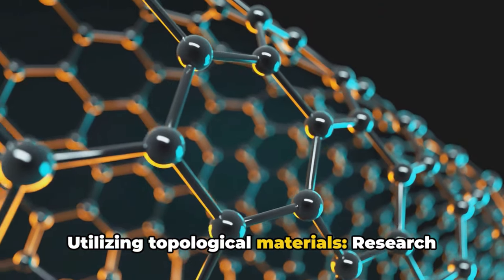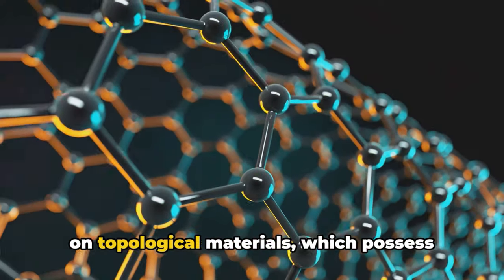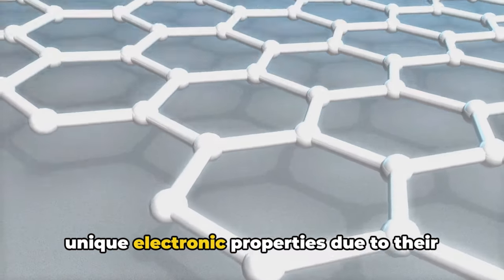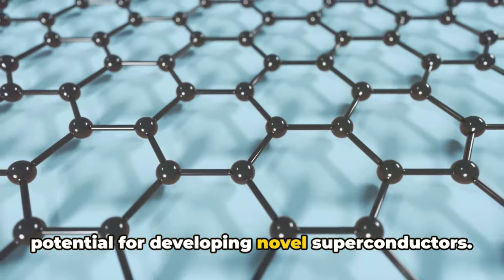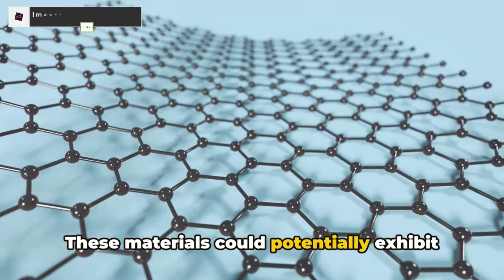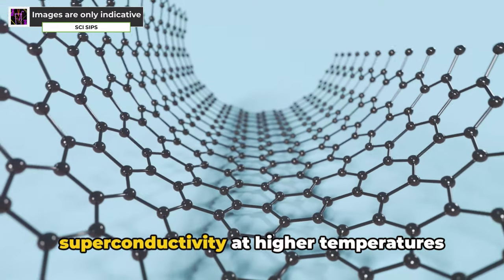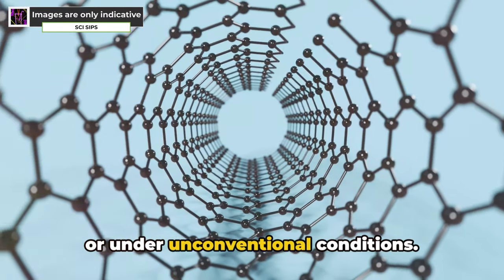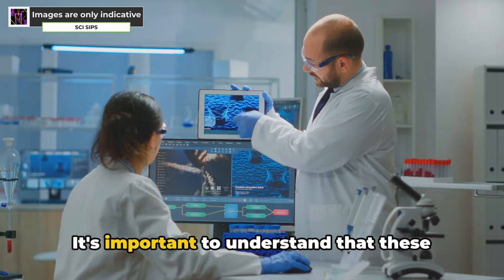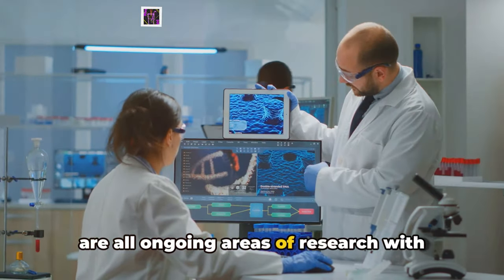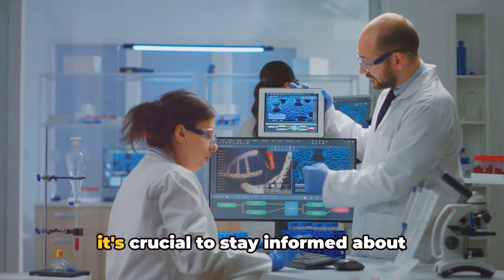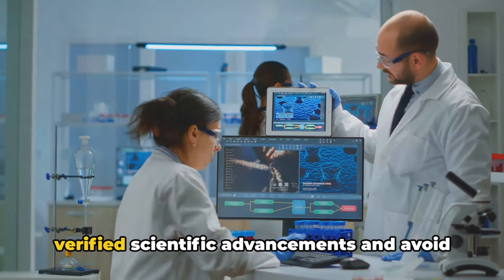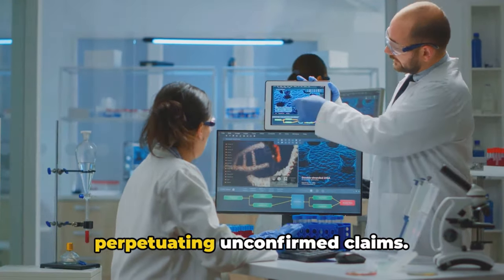Utilizing topological materials: Research on topological materials, which possess unique electronic properties due to their specific band structure, has shown potential for developing novel superconductors. These materials could potentially exhibit superconductivity at higher temperatures or under unconventional conditions. It's important to understand that these are all ongoing areas of research with evolving progress. While they offer promising directions, it's crucial to stay informed about verified scientific advancements and avoid perpetuating unconfirmed claims.